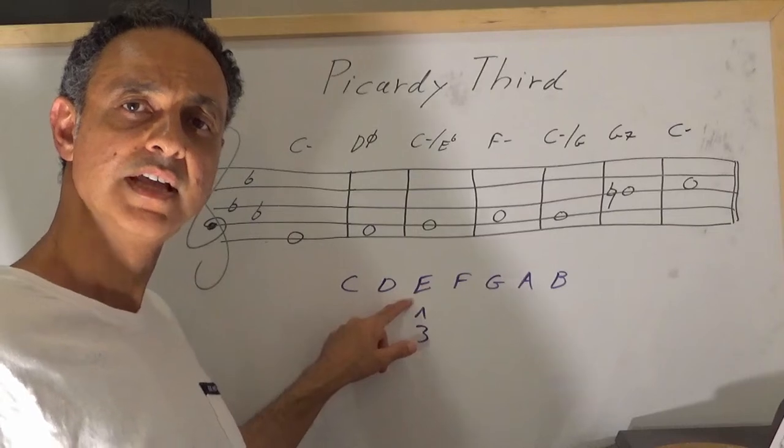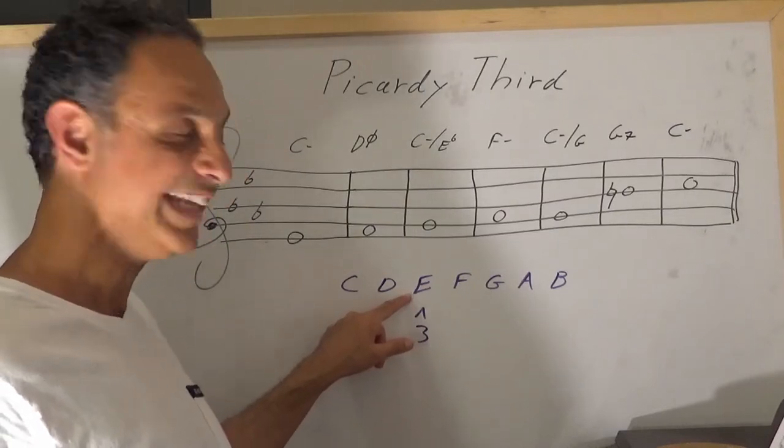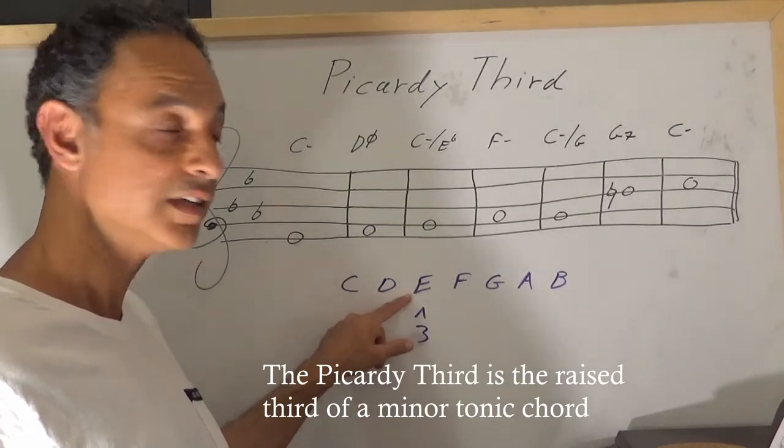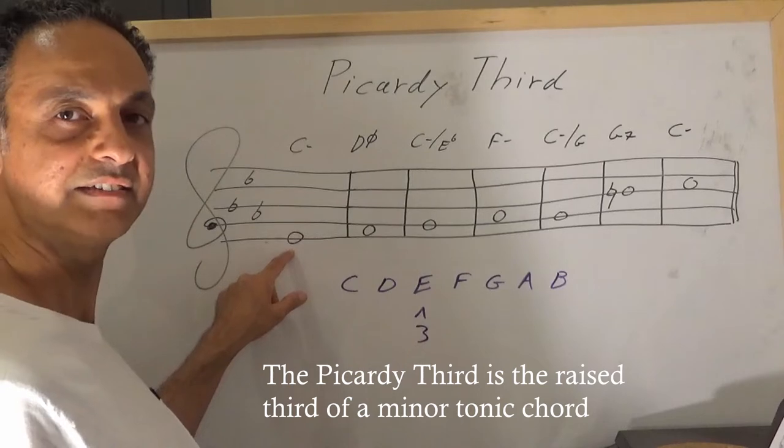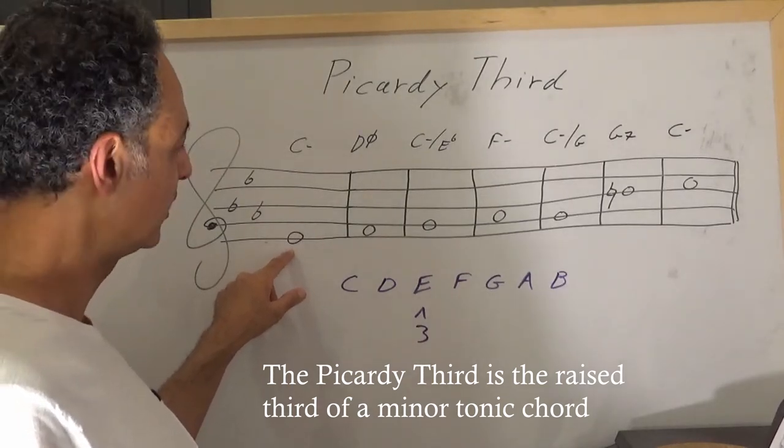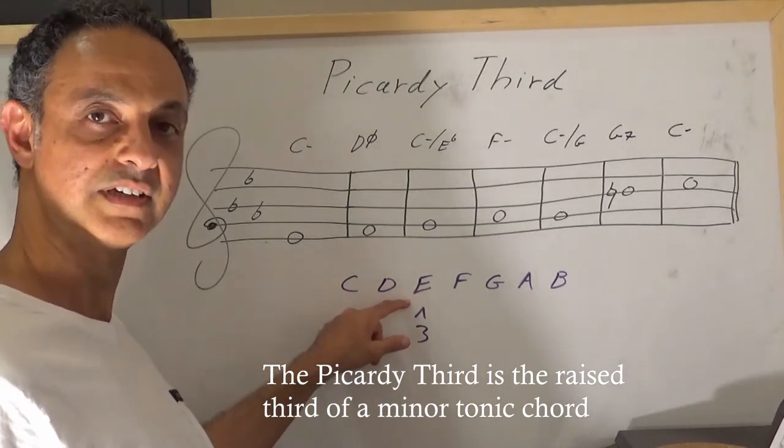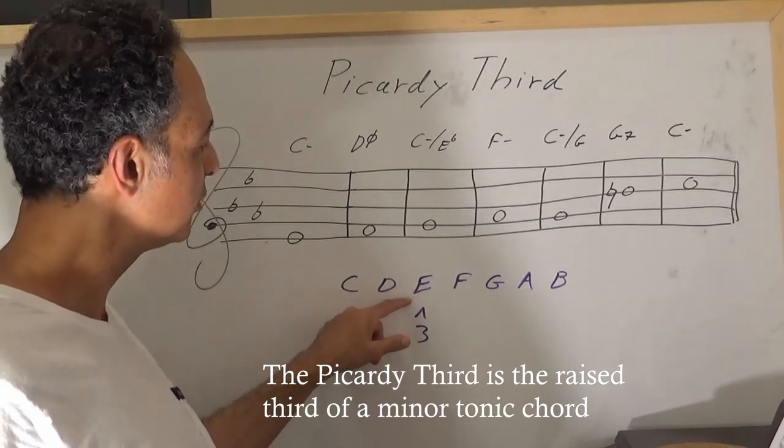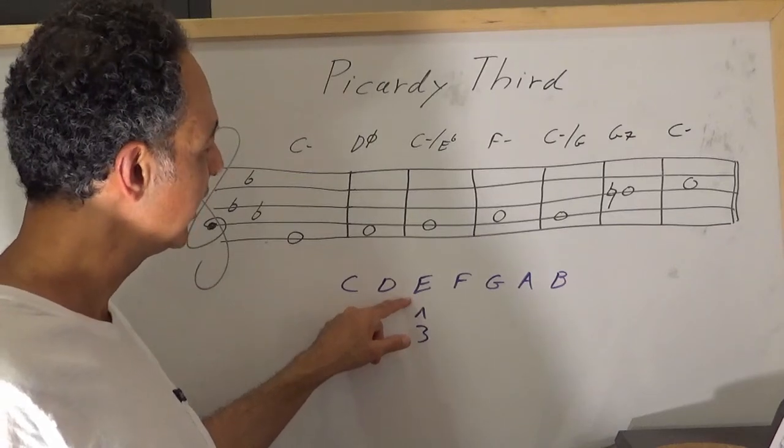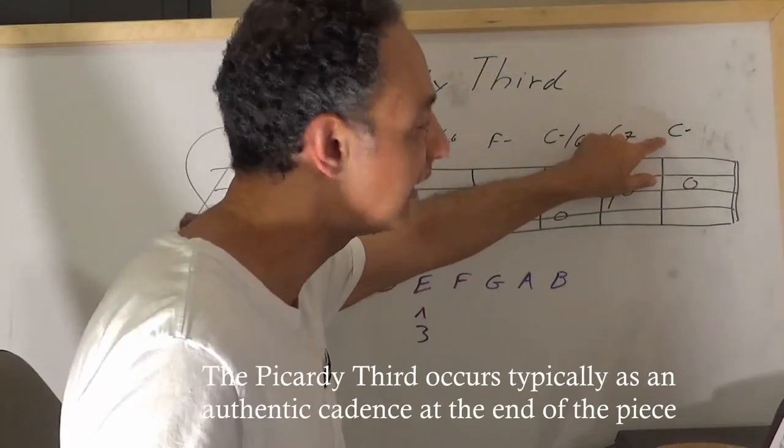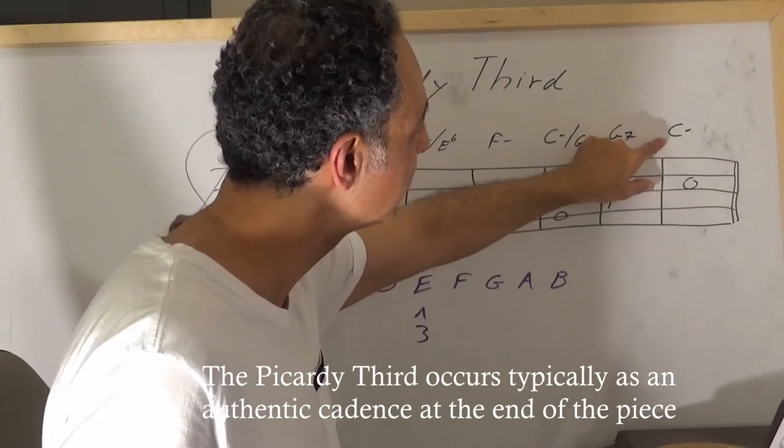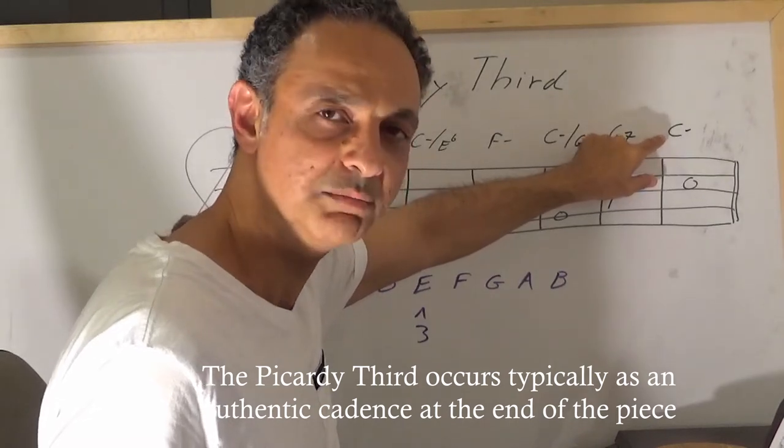Now take a look. Here we have the E natural versus the E flat in the C minor. We have the E natural. And if we borrow the E natural and we use it here for the last measure, take a look. We have a C minor chord.